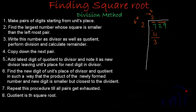The fourth step is: copy down the next pair. The number in the next pair is 29, so we copy down 29. This is where it differs from normal division — in normal division we copy down one digit at a time, but here we copy down digits in pairs, which is a two-digit number.